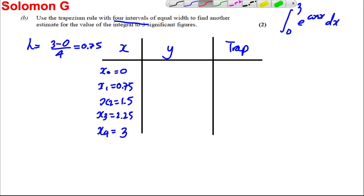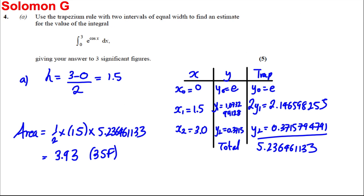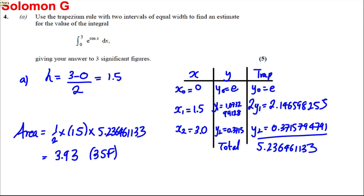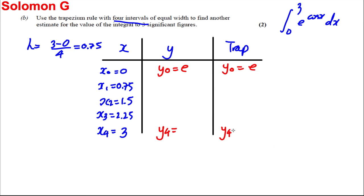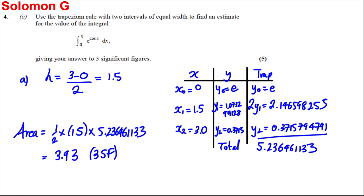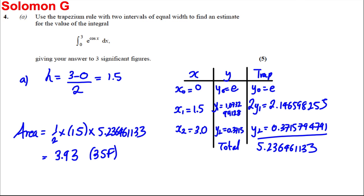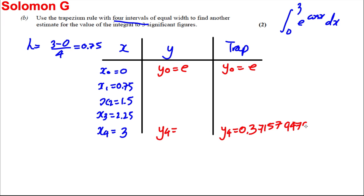Now, as before, some are the same. So Y₀ equals e, and I'm going to have that in my last column. This last one here, Y₄, is going to be as it was before, 0.3715794791.